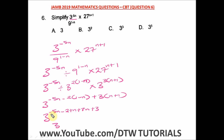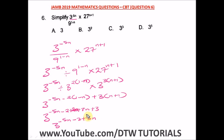Collecting terms: minus five n, plus two n, and plus three n gives us plus five n — wait, minus two times minus n gives plus two n. So we have minus five n plus two n plus three n, which gives plus five n. And the constants are four minus two plus three.